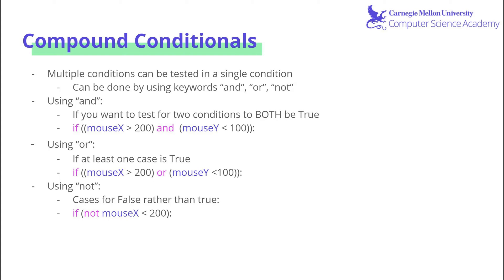And finally, not is for cases that are false rather than true. So if not mouseX less than 200, this entire statement will only be entered when mouseX is not less than 200. So by having compound conditionals, we will be able to test for more conditions with one if or elif statement.